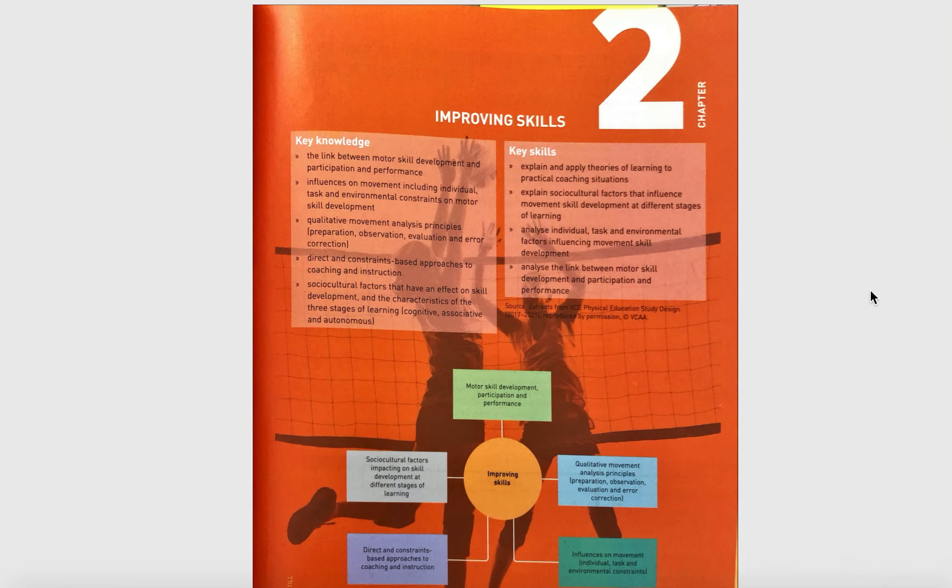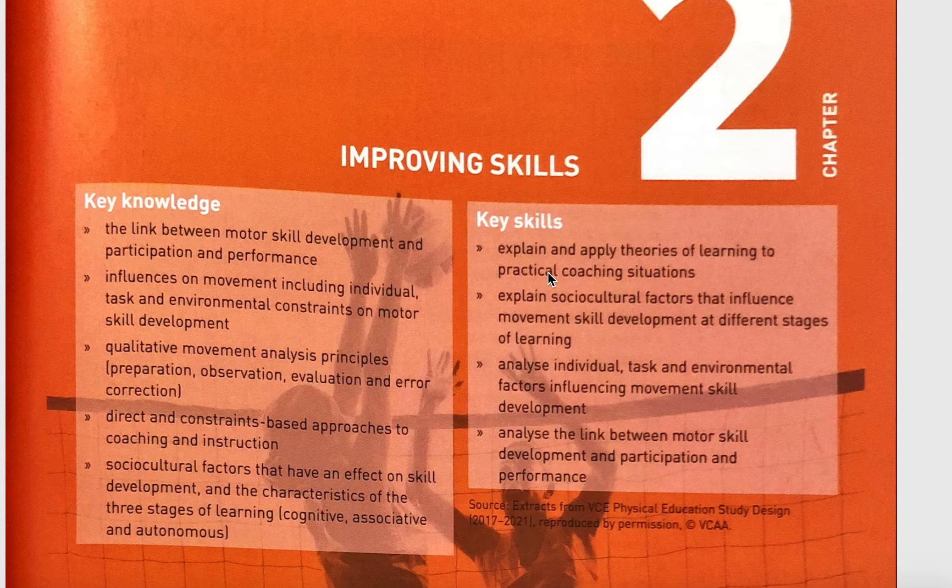This is Chapter 2, and we have started talking about this but not specifically taking notes yet. I want to make sure we're on top of this so we can have plenty of practice questions prior to the SAC in the last week of term. I like to spend time on this first page mapping the key knowledge and skills taken from the VCAA study design, making sure we've made sense of it. We want to look at motor skill development with participation and performance, and influences on movements — individual, task, environmental, and motor skill — all covered today.